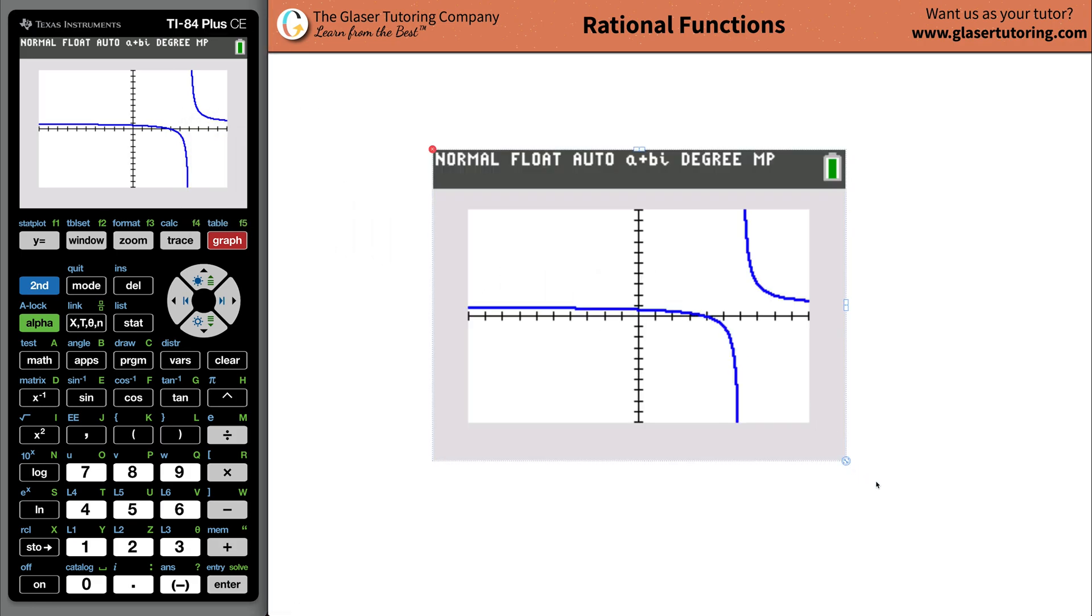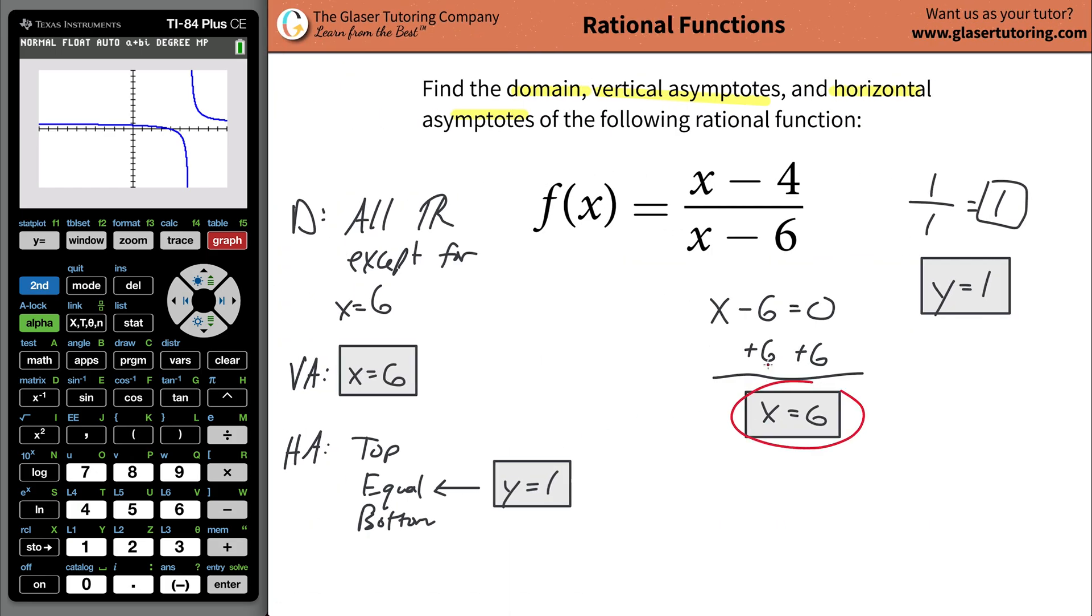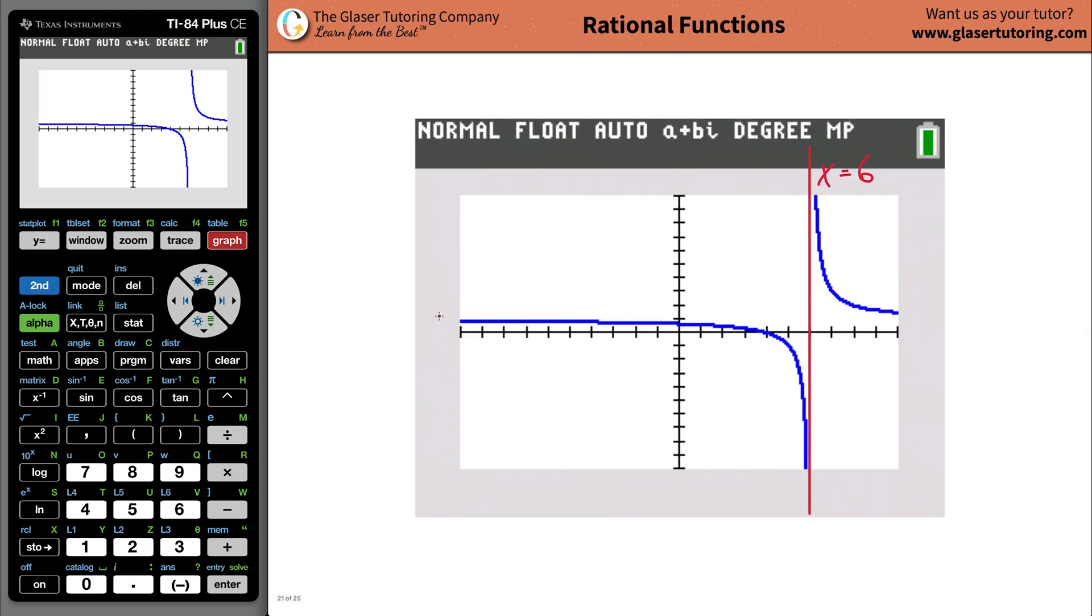Now notice where the horizontal and the vertical asymptotes are. We have a vertical asymptote here, right at x being equal to 6. 1, 2, 3, 4, 5, 6. Look at that. x is equal to 6. We said that that's what the vertical asymptote was going to be. And where's the horizontal asymptote? Right at y is equal to, look at that, y is equal to 1. Beautiful thing.